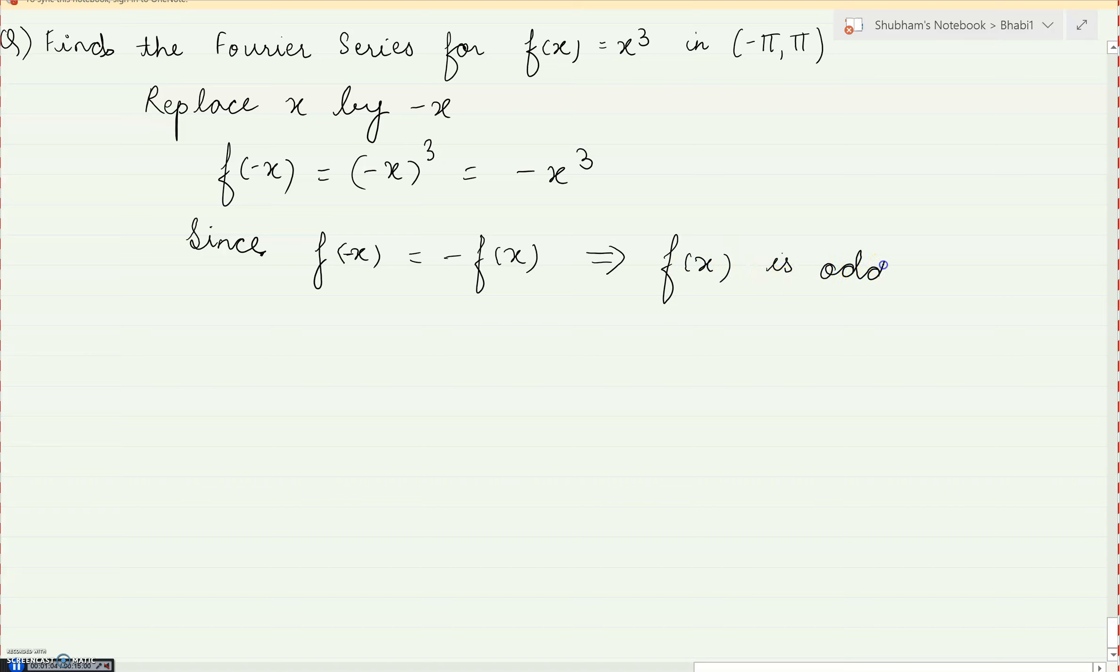So f of minus x equals minus f of x, which proves that the function is odd. Now in the earlier lecture I have summarized that whenever the function is odd, the sum becomes easier because a0 will become 0 and an will also become 0. So these two coefficients will become 0. So what remains is you have to find f of x. So the Fourier series is given by f of x equals summation n goes from 1 to infinity bn sin nx.